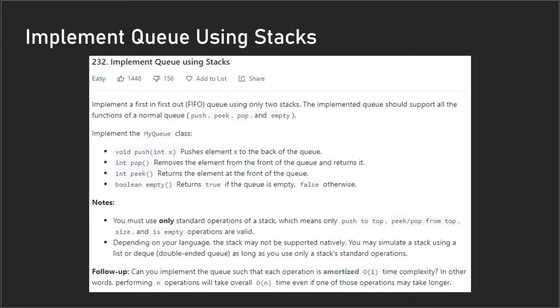And the tricky part about this problem is that we have this follow-up question here: can you implement the queue such that each operation is amortized constant time complexity? What I'm gonna do is first go over an O(n) time complexity and then go over how to optimize that O(n) time complexity and make it O(1) amortized.